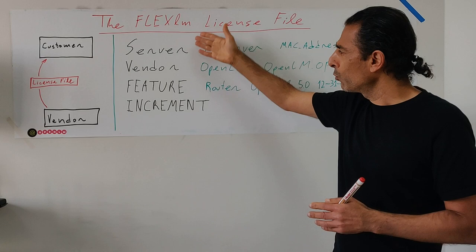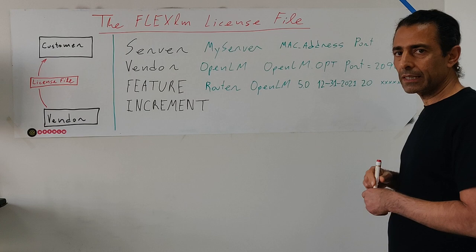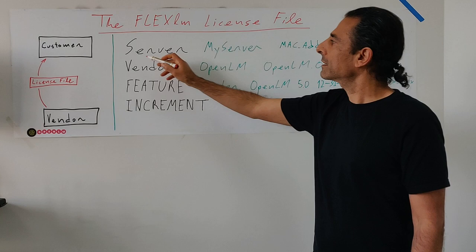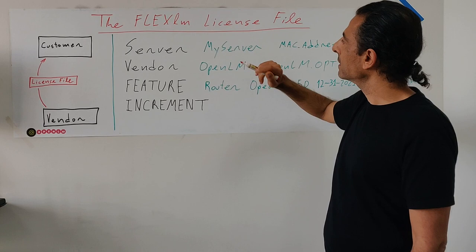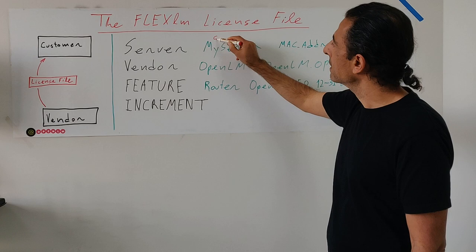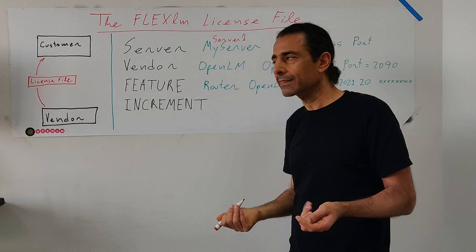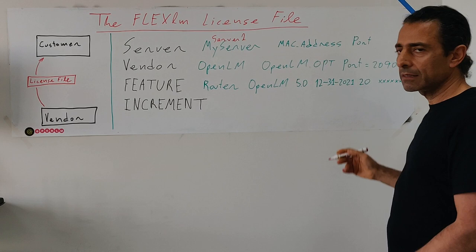I wrote the keywords in black and whatever is changing I wrote in green. Let's focus on the server line. The keyword is SERVER — we always find this first line in the license file. Then we see the name of the server, for example 'server1' or whatever name you have for your license server. Then we have the MAC address — numbers and letters.